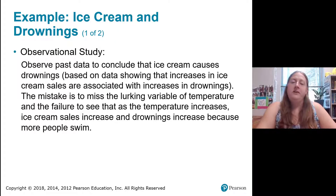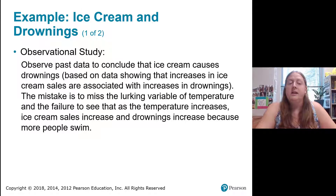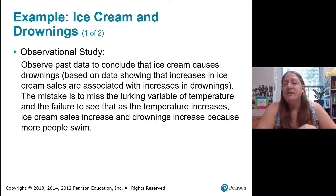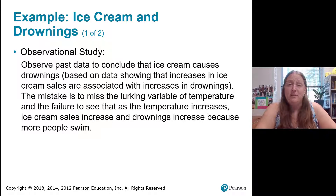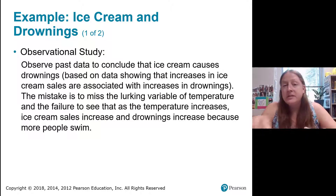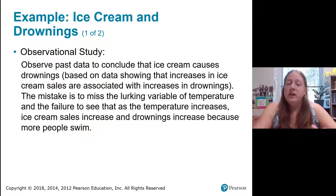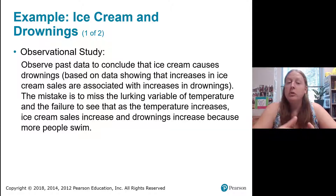Here's an example of a fairly famous statistical study. It's an observational study where researchers observed past data and concluded that ice cream causes drownings, based on data showing that increases in ice cream sales and increases in drownings are associated with one another — they both happen at the same time. But it's a mistake to think one causes the other. What's really happening is there's a lurking variable: temperature. When it's warm outside, more people eat ice cream and more people swim, so more people drown.